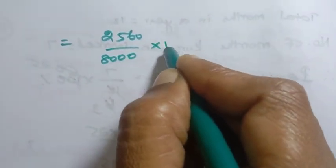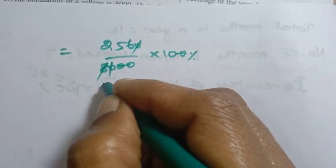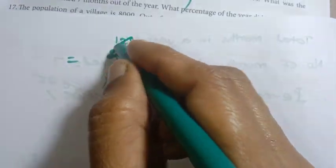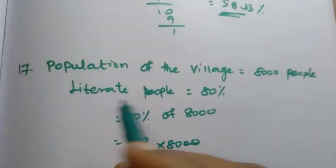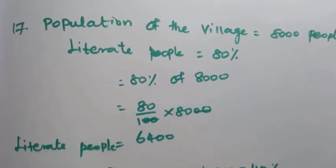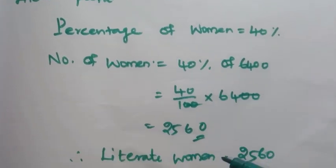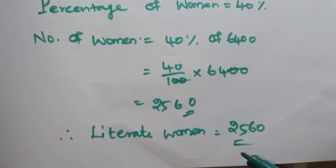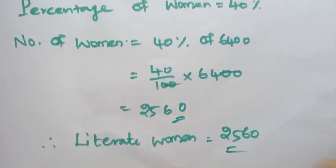Percentage of literate women to total population = 2,560 by 8,000 into 100. Two zeros cancel, giving 32 percent. So literate women form 32 percent of the total population. That is the answer to problem 17.